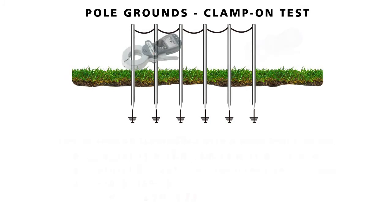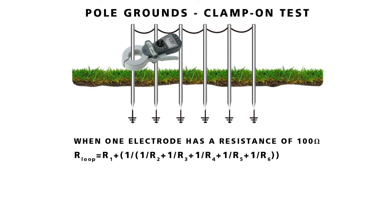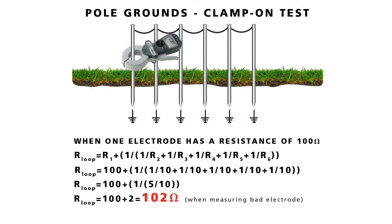How can the clamp-on identify a bad ground in an otherwise good string? Calculation shows that a 100 ohm ground in parallel series with 5 10 ohm grounds would read 102 ohms, readily identifying the problem.